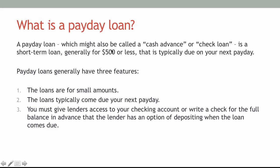A payday loan might also be called a cash advance or a check loan. It is a short-term loan, generally for $500 or less, that is typically due on your next payday. So if you get paid every two weeks or once a month, it's borrowing money you're going to earn for an emergency you have right now. Payday loans generally have three features: loans are for small amounts, the loans typically come due on your next payday, and you must give lenders access to your checking account or write a check for the full balance in advance that the lender can deposit when the loan comes due.